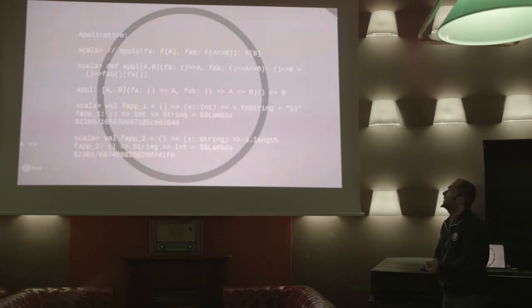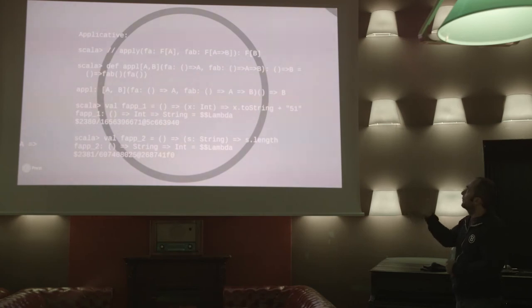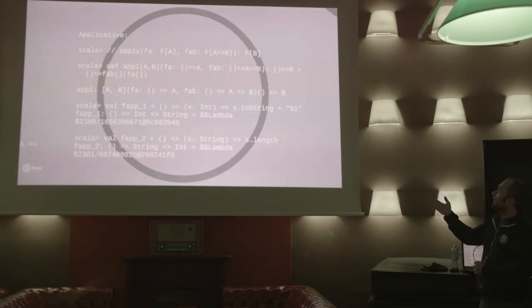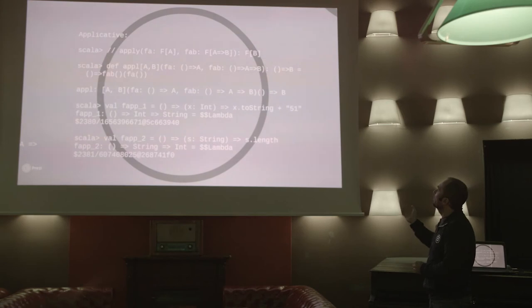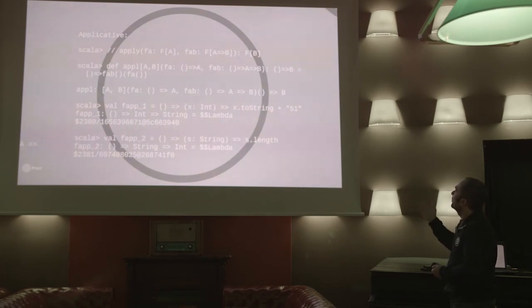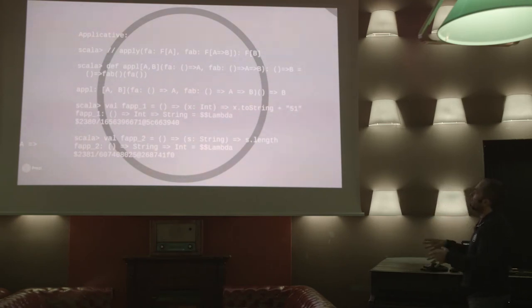There is another example about the applicative. The applicative is something which gives me an apply function, where I can combine my f of A with f of a function from A to B. On the left-hand side argument is a nullary function giving me an A; on the right-hand side argument I have also a nullary function, but it gives me a function from A to B. And as a result I have to get a nullary function giving me B. Again, I have a really very straightforward implementation, and from now I can combine these two functions.